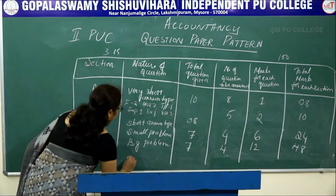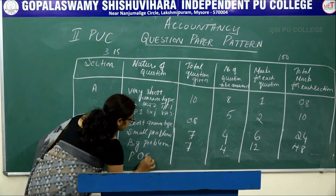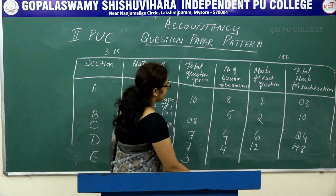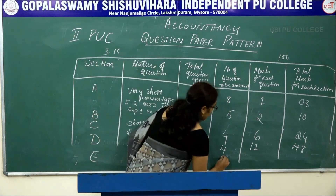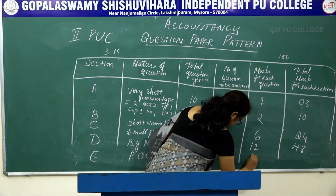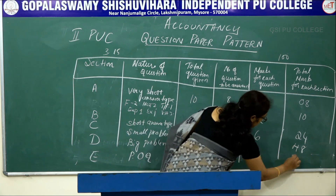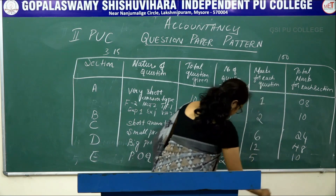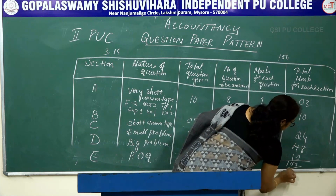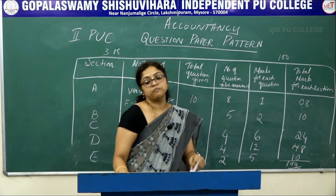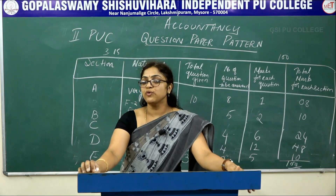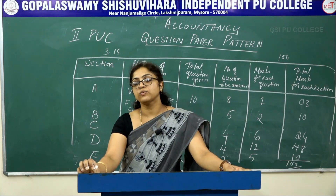Part E consists of practical oriented questions. Total number of questions is 3, number of questions to be answered is 2, and marks allotted per question is 5, so the total is 10 marks. The total maximum marks is 100. I hope today's session was useful for you all. Thank you.